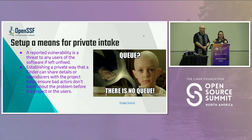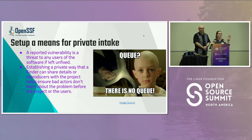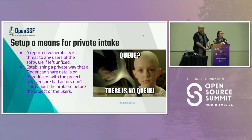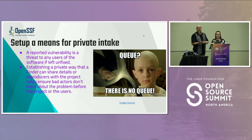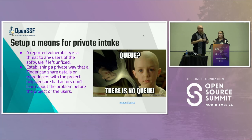Setting up a means for private intake of vulnerability reports — before you actually receive them — will be incredibly helpful. A reported vulnerability is truly a threat to any users if the software is left unfixed. Establishing a private way so that external entities can share this information with you without just opening an issue on your repo — zero-daying you, sharing that information with the entire world at the same time they're sharing it with you — gives you as a maintainer the ability to respond, collaborate, and develop a fix before sharing it with the broader community. There's a significant amount of bad actors constantly monitoring your software, and any issue or PR submitted that isn't protected through private means could be reverse engineered before you're able to develop a fix.